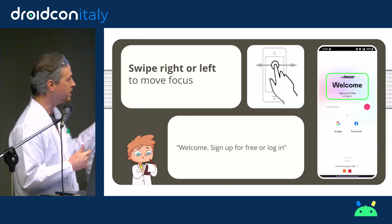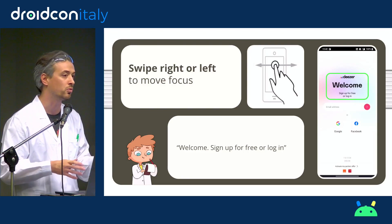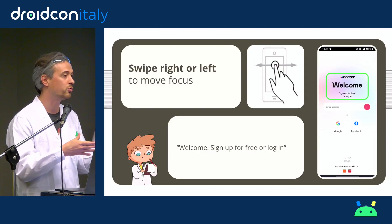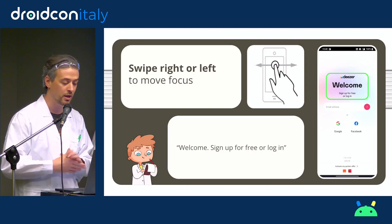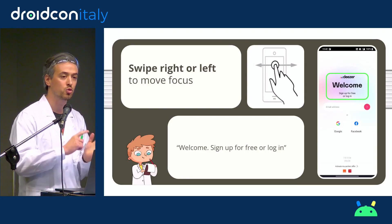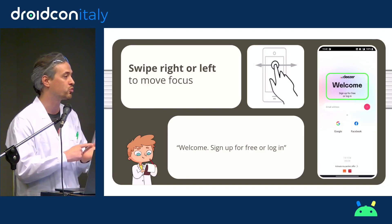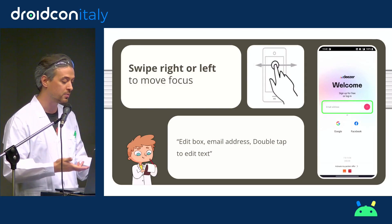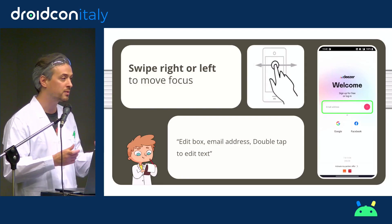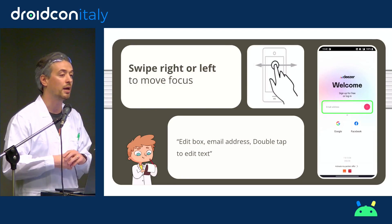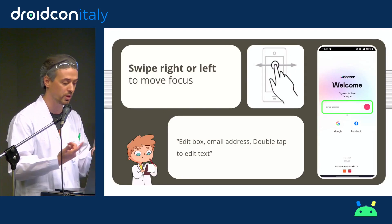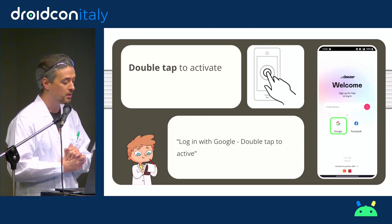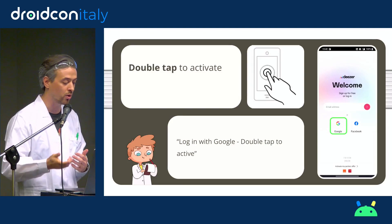My TalkBack is activated and here I have an application named Deezer — it is a French Spotify. TalkBack starts at the first focusable element, so here it says 'Sign up for free' or 'Login.' The first gesture with TalkBack is the swipe right or left to move to the next or previous focusable element. I swipe right and go to the next element, which is the edit text. TalkBack will say: 'Edit box, email address, double tap to edit text.' So TalkBack knows the element type and how to interact with it.